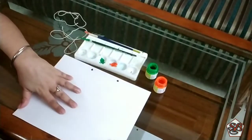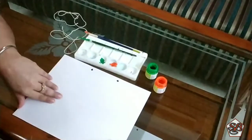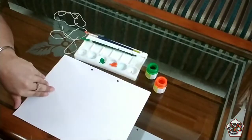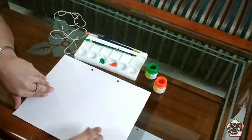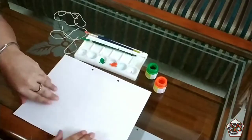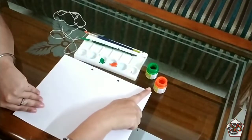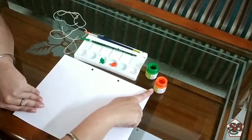Good morning students. As you know, we have just finished with the topic of symmetry. Now we'll do an art integrated activity related to that. For this we need a sheet, colors—I'm using acrylic colors, you can use poster colors also—brushes, and a thread. You need to have a little thick thread.